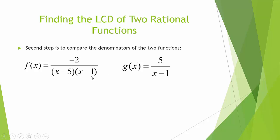Now we should compare the two denominators between f of x and g of x. Comparing x minus 5 times x minus 1 to x minus 1, we notice that they both share a factor of x minus 1, so we only count that once when finding the LCD, because we're looking for distinct prime factors. So x minus 1 is one distinct prime factor, and x minus 5 is another distinct prime factor.